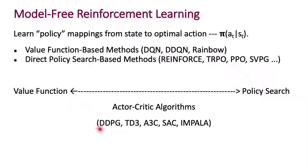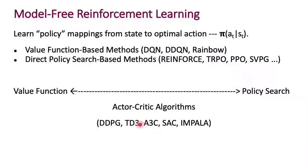Among those actor-critic algorithms is the algorithm we already saw in the last segment on DQN for continuous actions, which is DDPG. There are several other algorithms like TD3, A3C, SAC, Impala, etc. All of these represent some of the highest performing algorithms we have today in reinforcement learning.